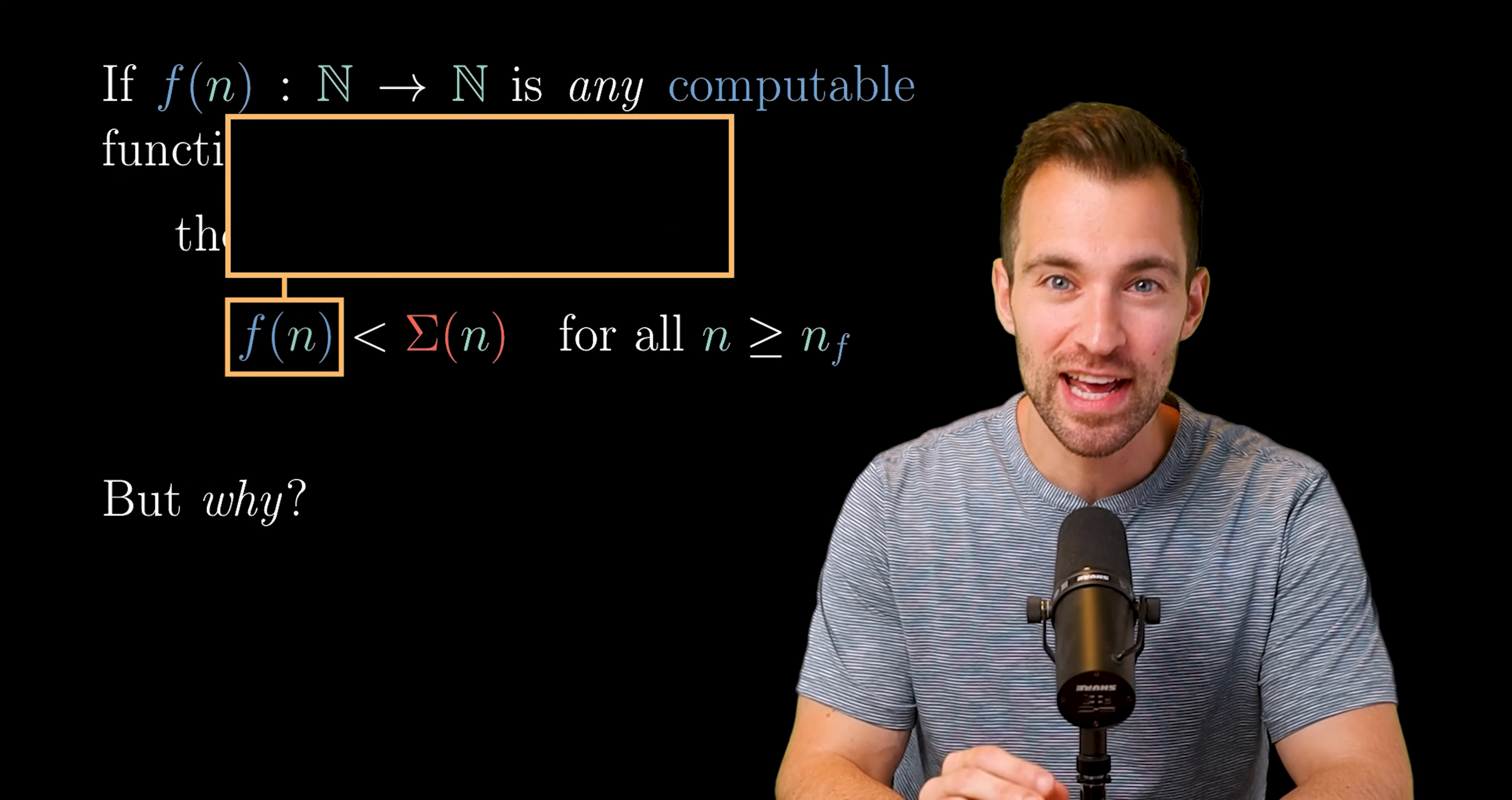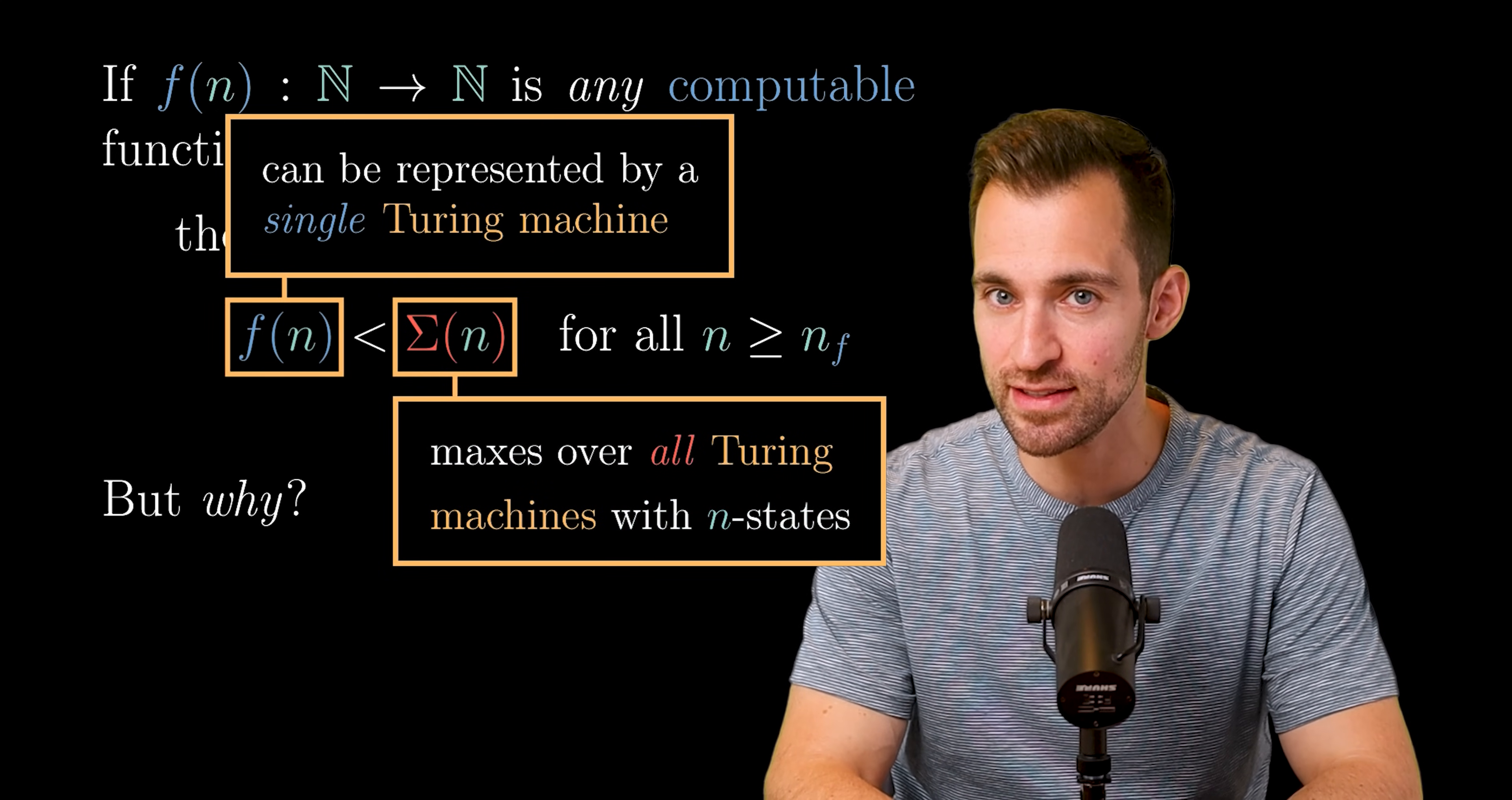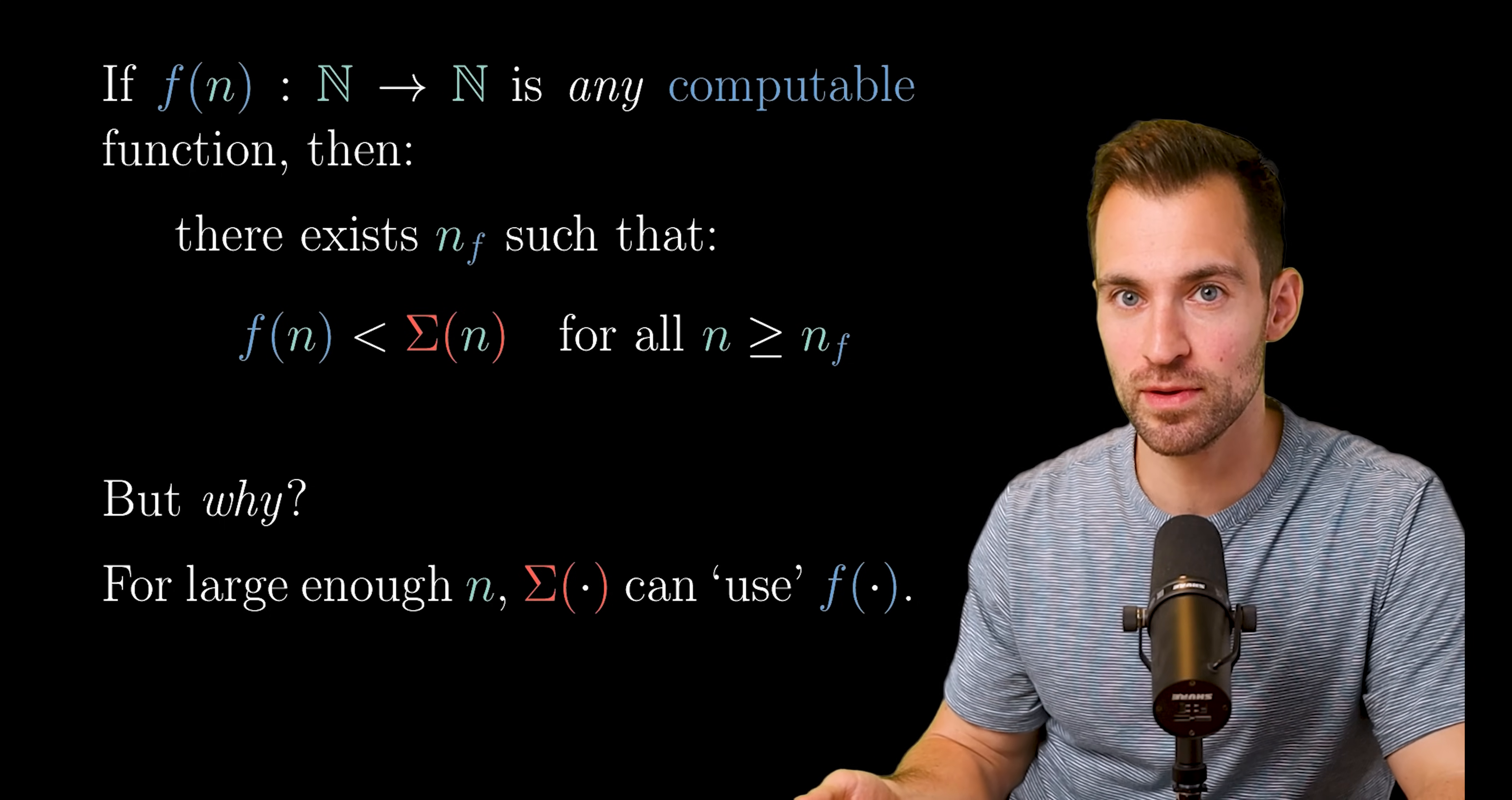It's because the given computable function can be represented by a single Turing machine, which by definition has a fixed number of states. That is, there is a Turing machine which if given a tape with n written on it, it'll write f(n) onto the tape. On the other hand, sigma n maxes over all Turing machines with n states. So beyond a point, sigma can reference the computable function's Turing machine and use it to produce larger outputs if that's necessary. In other words, for large enough n, sigma can use f. There's more to the proof than that. Since to use f, we first need to write n onto the all zeros tape. But that's the general idea.